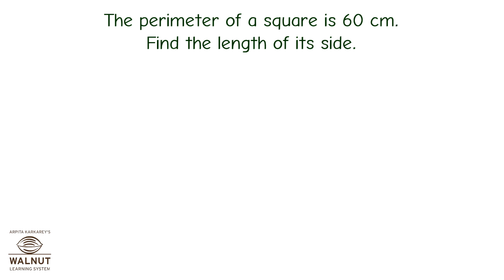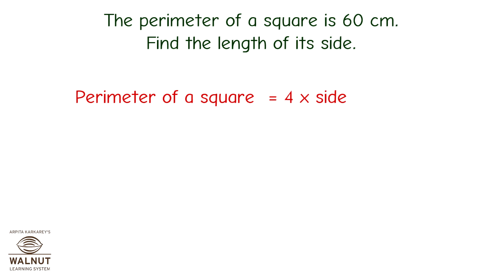Let's write the formula first. Perimeter of a square is equal to 4 multiplied by side. We know the perimeter, so let's put the value of the perimeter in the formula. So it becomes 60 is equal to 4 multiplied by side.